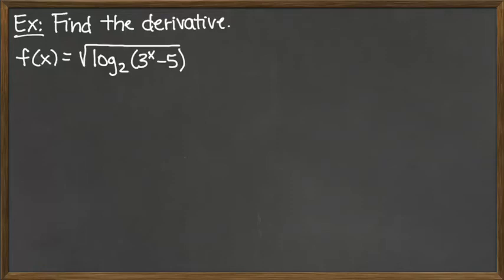To take the derivative of this function, we start by rewriting the function so that we don't have the square root written, but rather the exponent one-half written. So we have this as the log base 2 of 3 to the x minus 5, and that whole logarithm is raised to the one-half power.